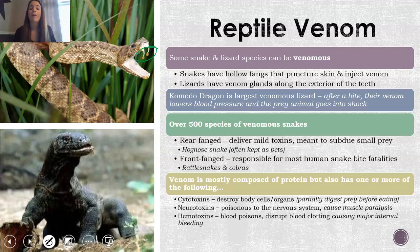Front-fanged snakes, though, are the ones responsible for most human snake bite issues. These are things like rattlesnakes and cobras.